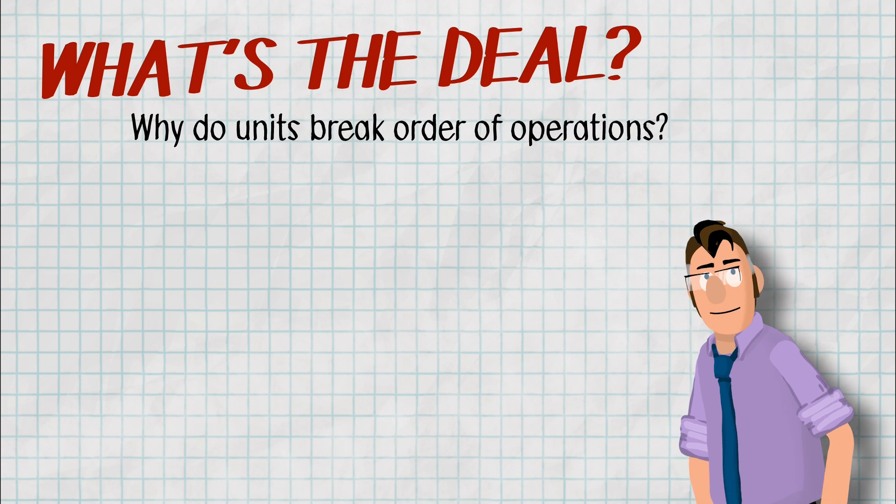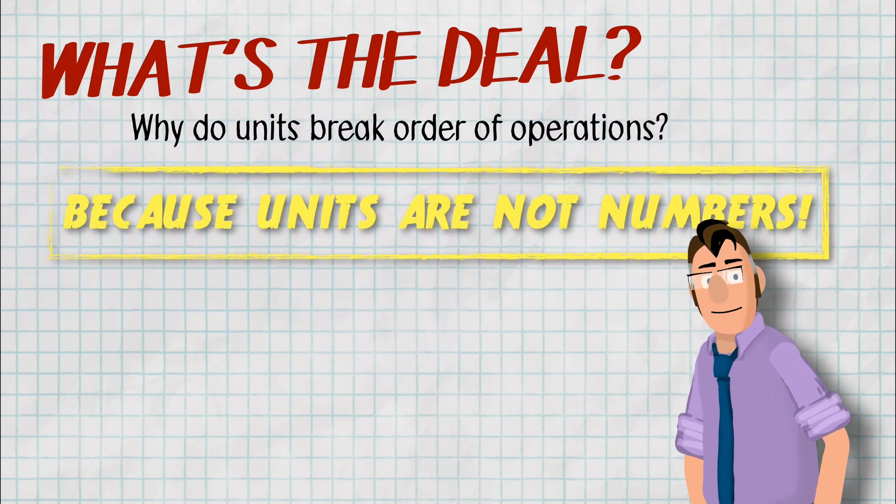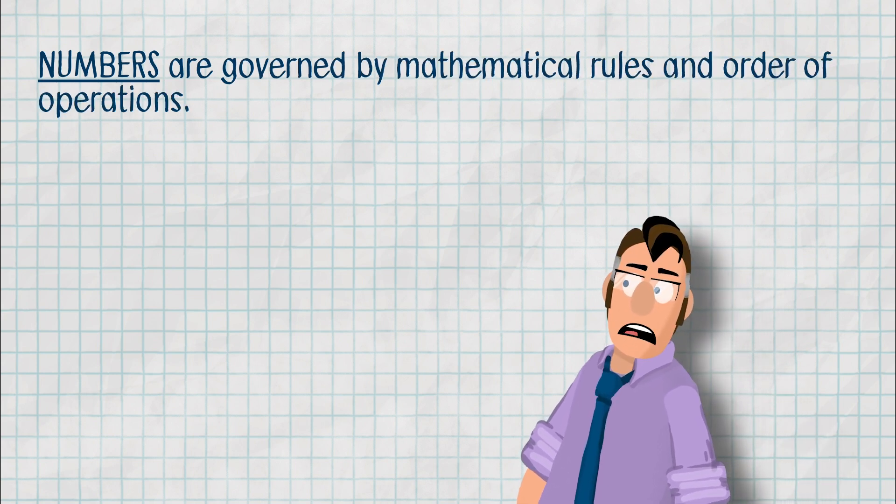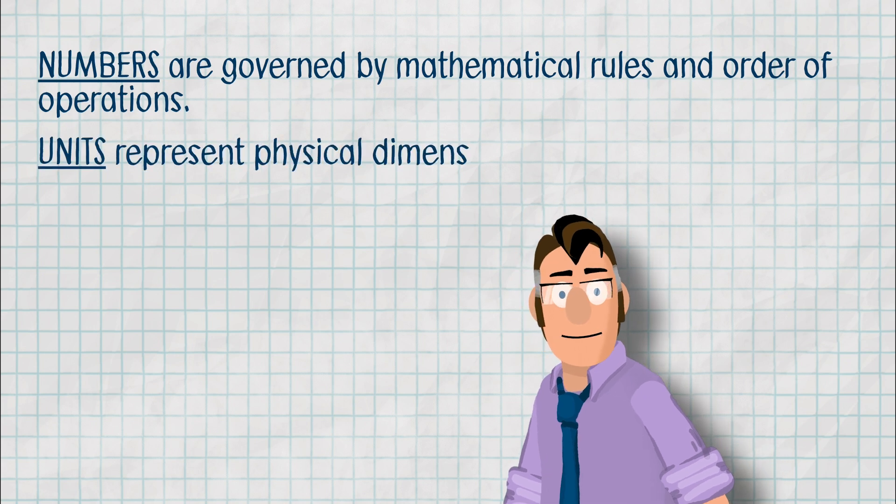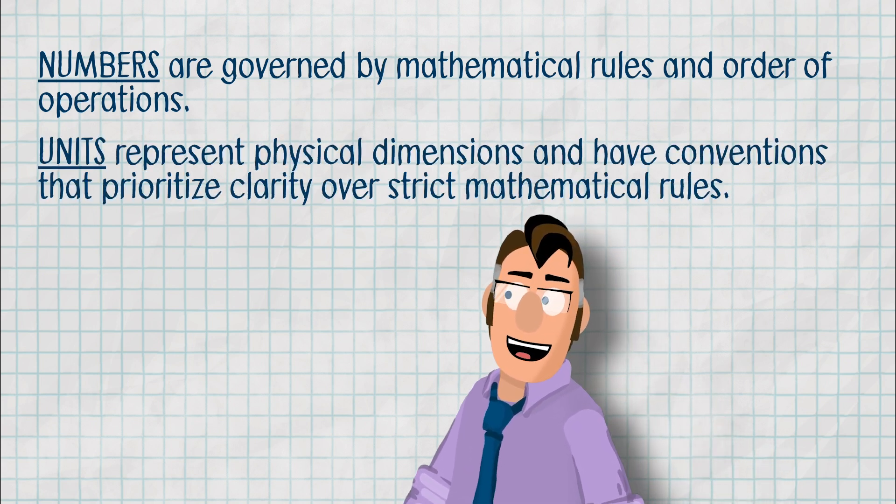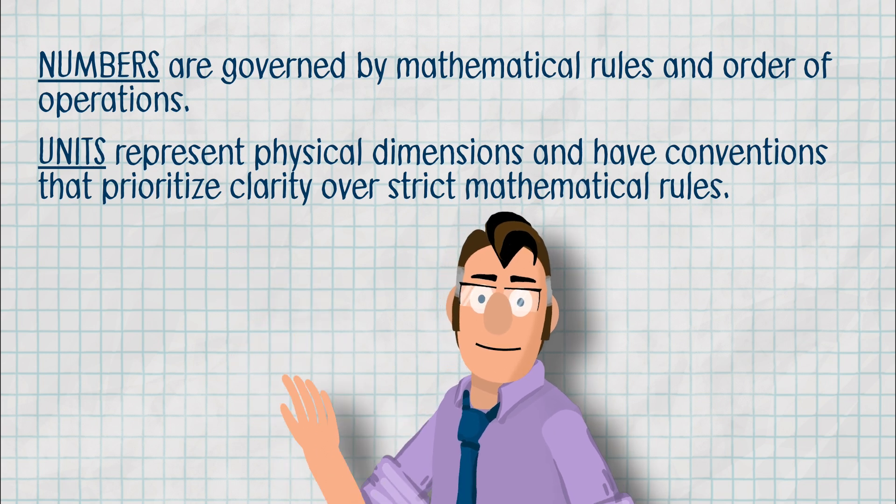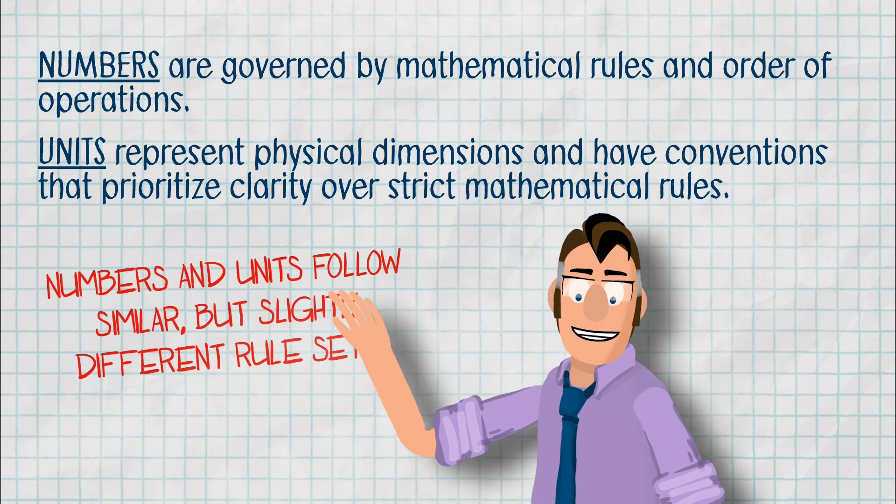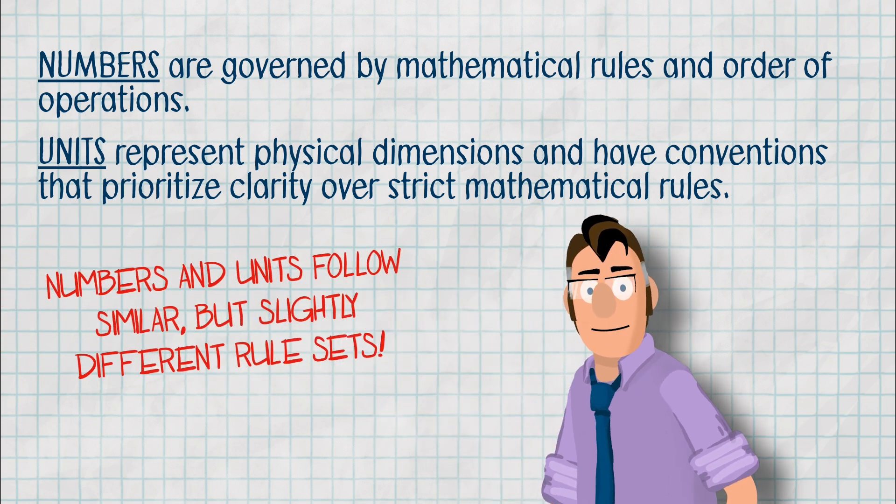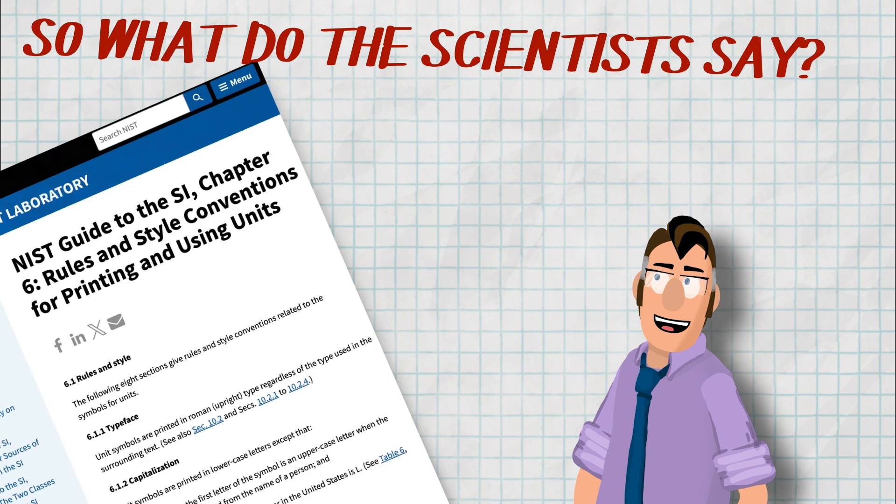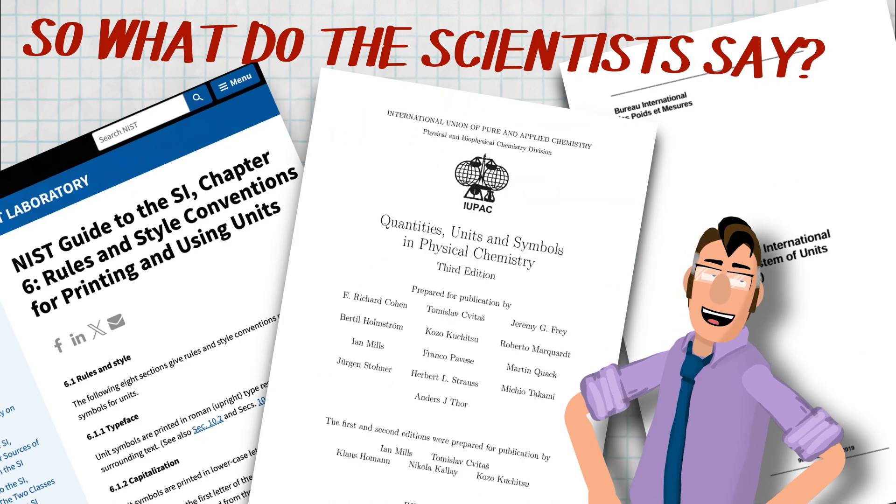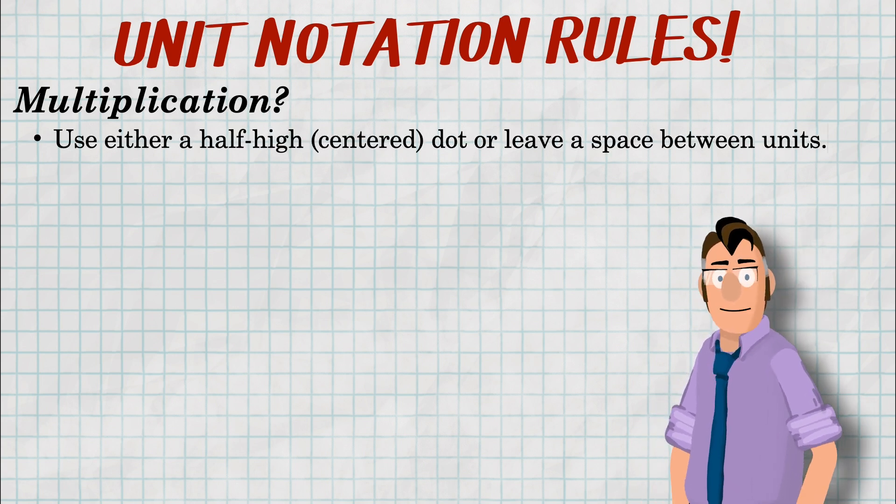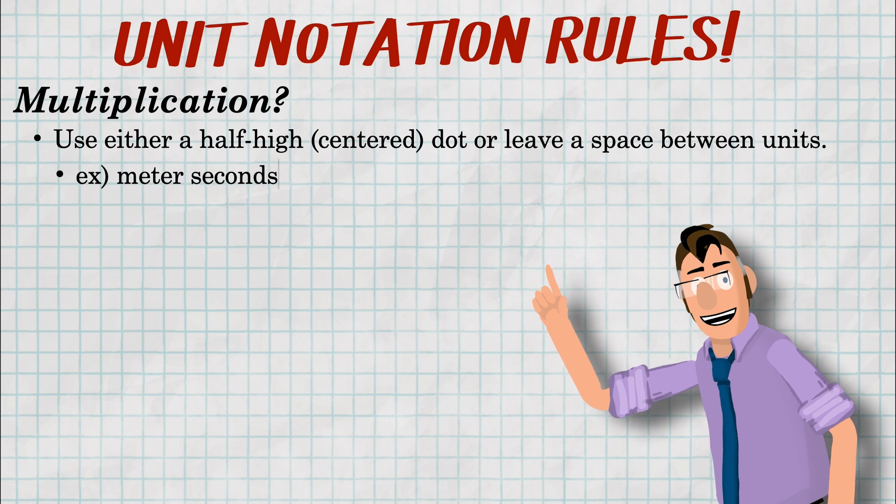Well, maybe this isn't a surprise to you, but it was to me. Units are not numbers. And that does have an effect on stuff. So again, we know that numbers are governed by mathematical rules and the order of operations. But units are actually different. Units are representing the physical dimensions and have conventions that really prioritize clarity and consistency over a strict mathematical interpretation. So you can imagine that they have similar but slightly different rule sets. So I went ahead and looked at a couple style guides from scientific organizations online. I will share the links to them in the doobly-doo below. But here's the summary of what I found. So for multiplication, you'll want to use a half-high dot, sometimes called a center dot, or leave a space between the units.